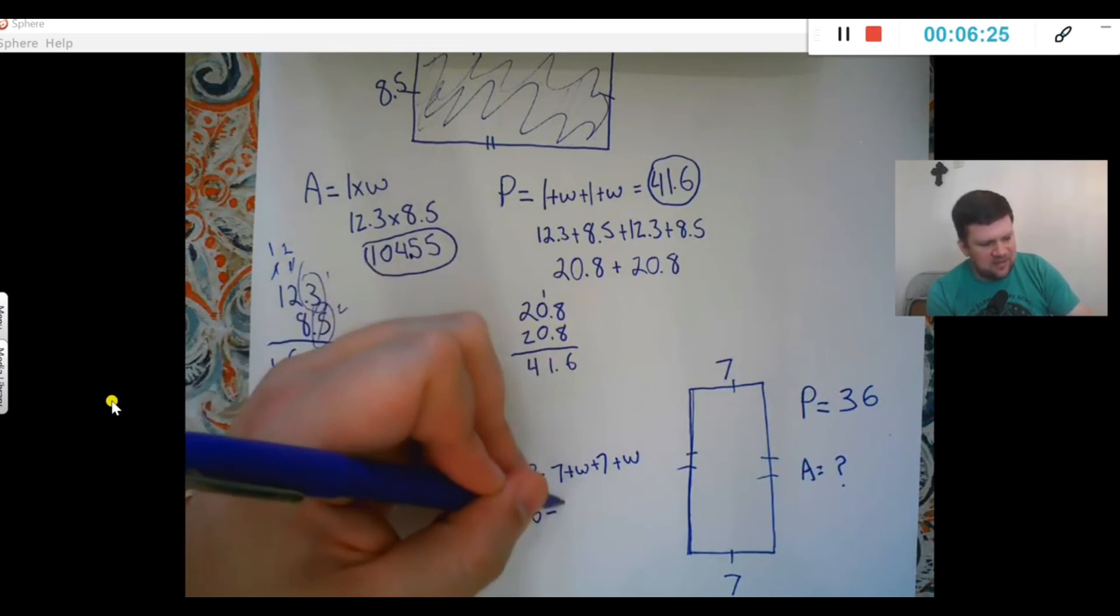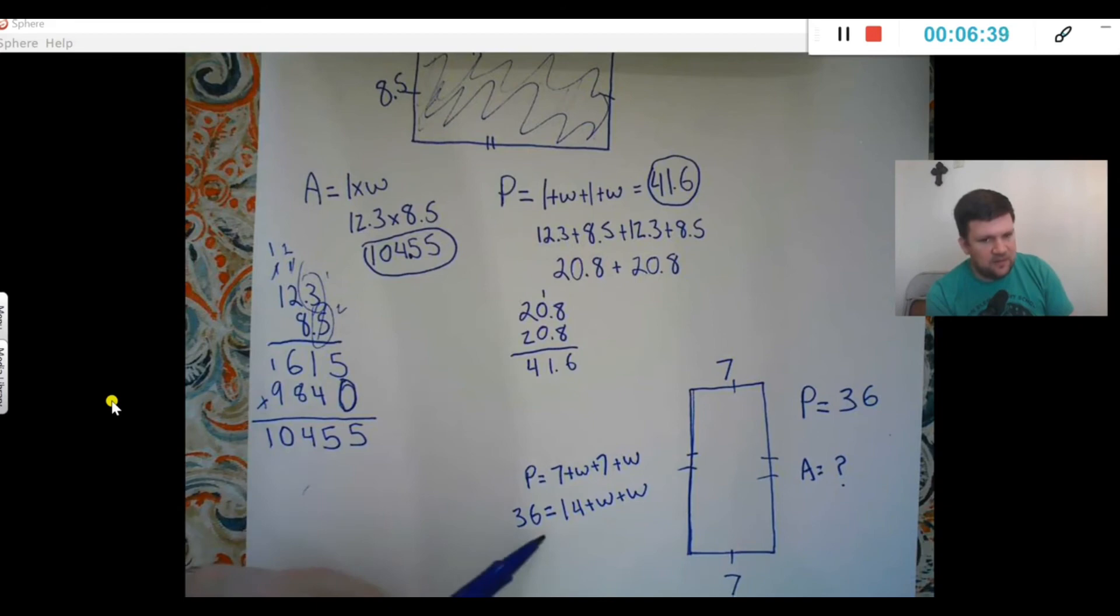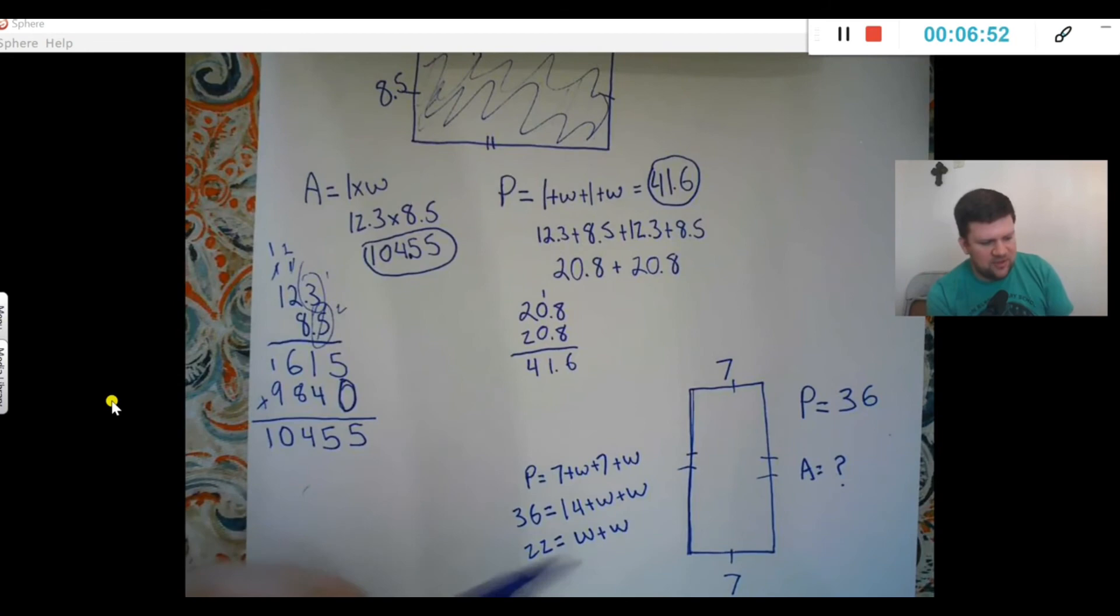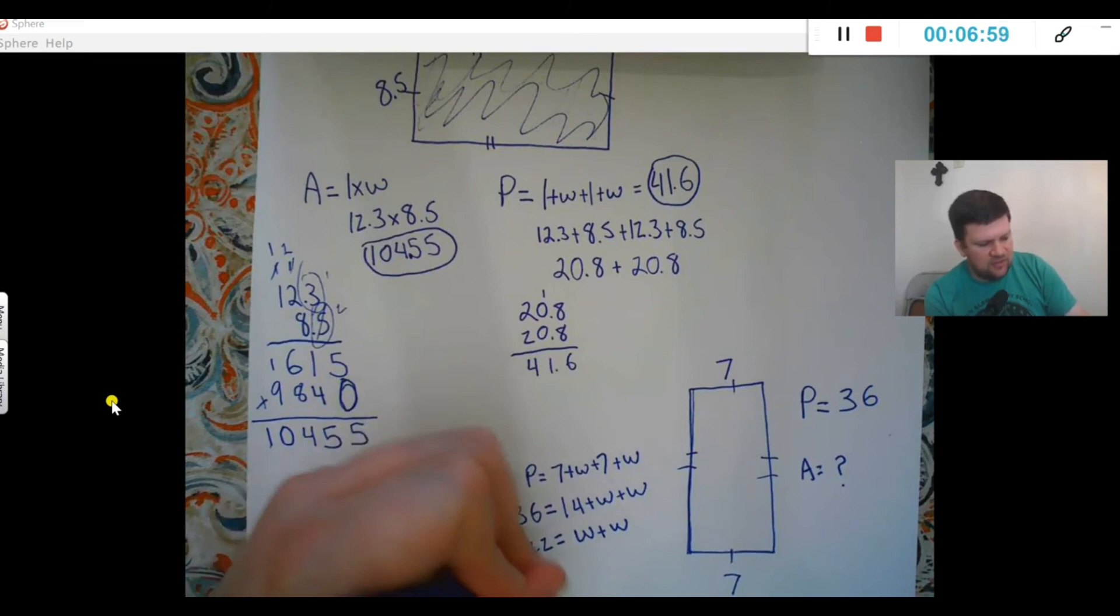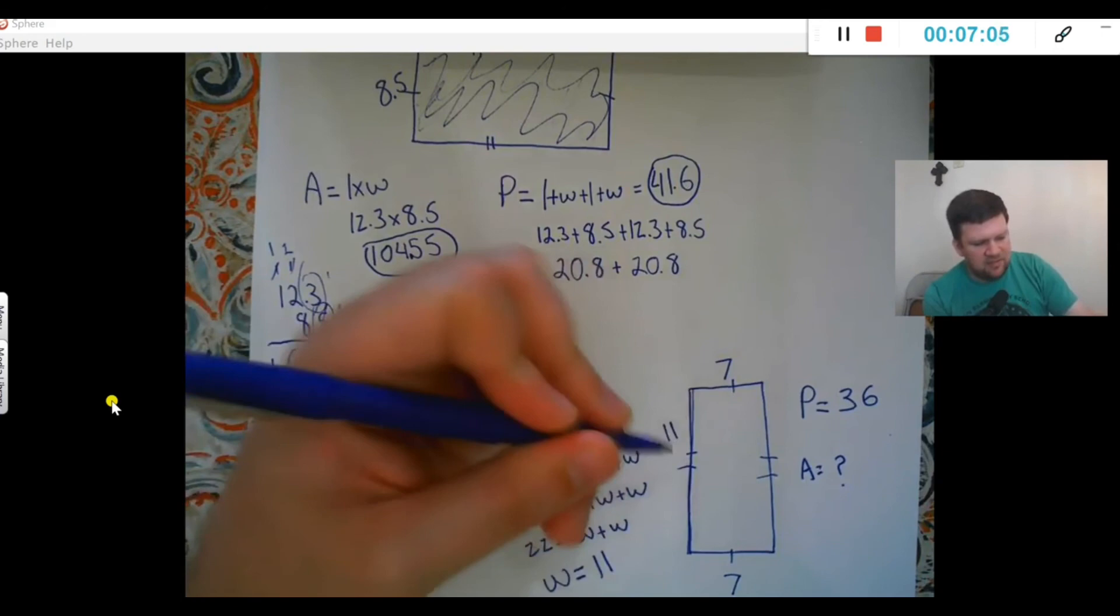I'll go ahead and combine these: 7 plus 7 is 14 plus 2 widths. So that means whatever the width is going to be is half of 36 minus 14. I'll subtract that out, which gives me 22 equals width plus width. So hopefully you see both those widths—the width should be 11, because 11 plus 11 is 22. So the width is 11. Now once I figured out this width is 11, to do area I just do length times width: 7 times 11. So area equals 77.